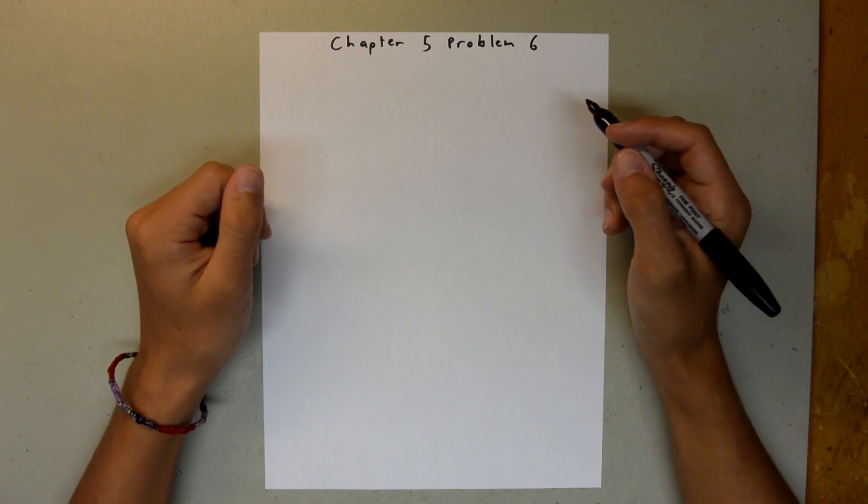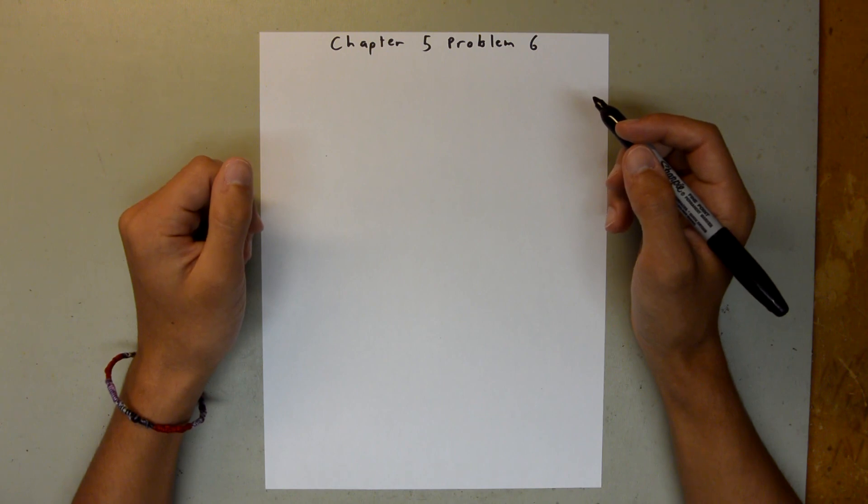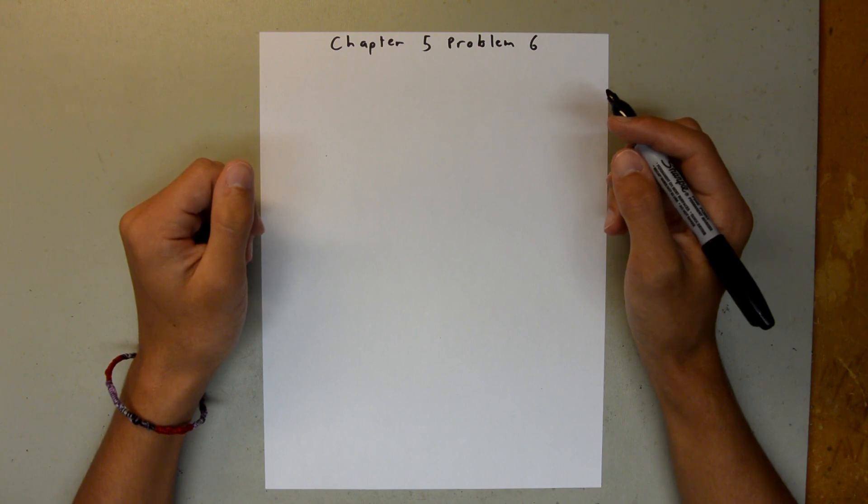And Problem 6 talks about two forces that are acting on a particular particle, and we are told that we have a constant velocity. We're given the velocity vector and one of the forces that is acting on it, and we are asked to find what the other force is.